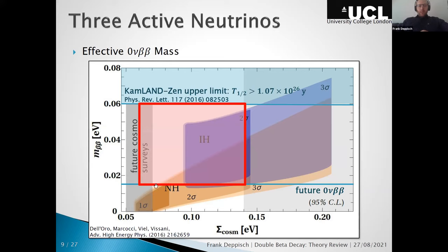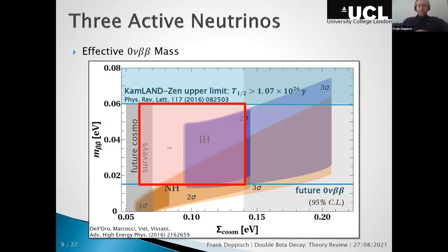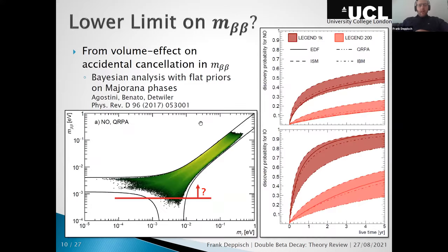Even if the lightest neutrino is perfectly massless, in the future what we're probing is this box region. In the normal ordering case you still see a sizable chunk being probed by neutrinoless double beta decay. As a BSM physicist, it would be most interesting to make a measurement in the white space region, because that area is not consistent just with light neutrino exchange — you would need physics beyond light neutrino mass.